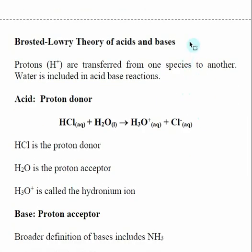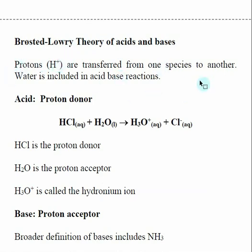From here on out in chemistry, when chemists talk about acids and bases, they are typically referring to what's called the Bronsted-Lowry theory of acids and bases. In terms of an acid, it's pretty much the same as with the Arrhenius theory — an acid produces H+, but instead of just putting it into solution, it's defined as something that transfers an H+ to a different species, in this case water.